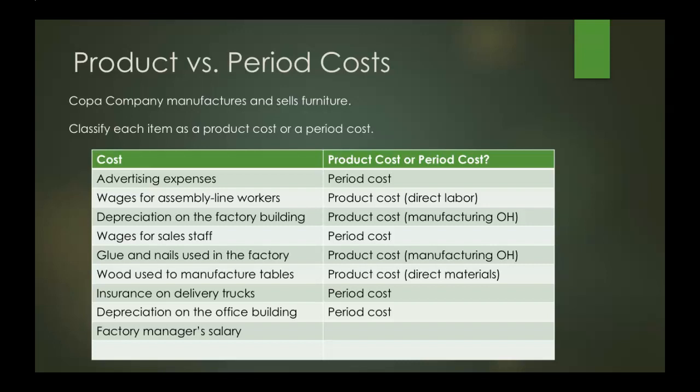Now, a factory manager's salary. They're involved in the factory and the manufacturing process, so it's going to be a product cost. It's manufacturing overhead and not direct labor because this factory manager is not directly involved in the manufacturing — they're instead overseeing the manufacturing of the furniture.